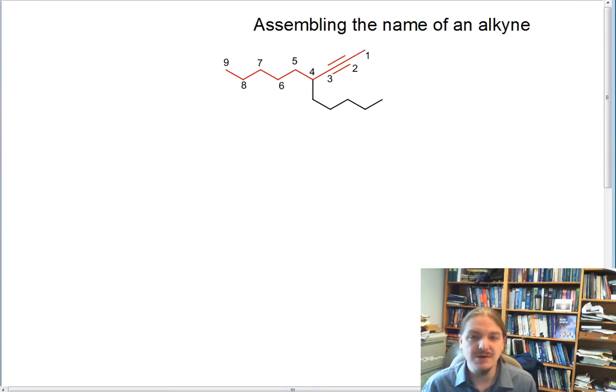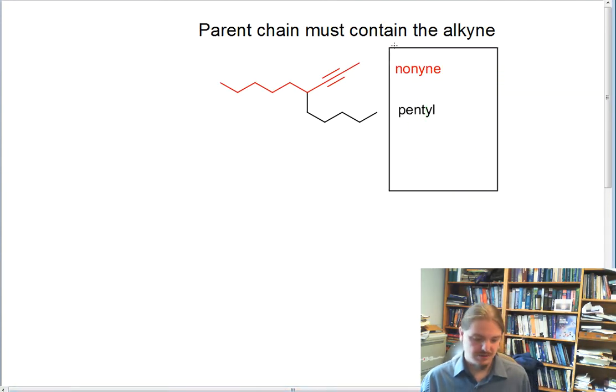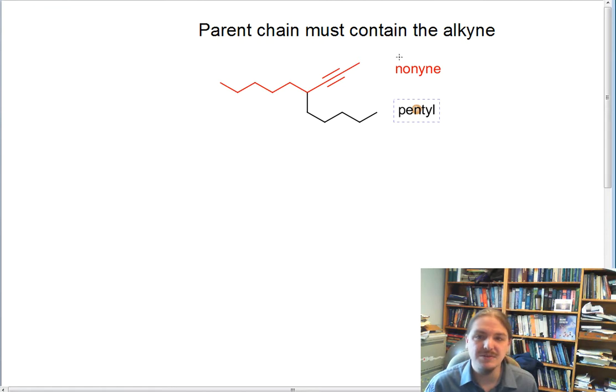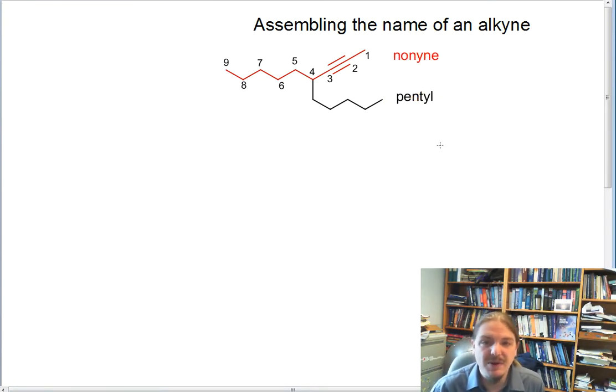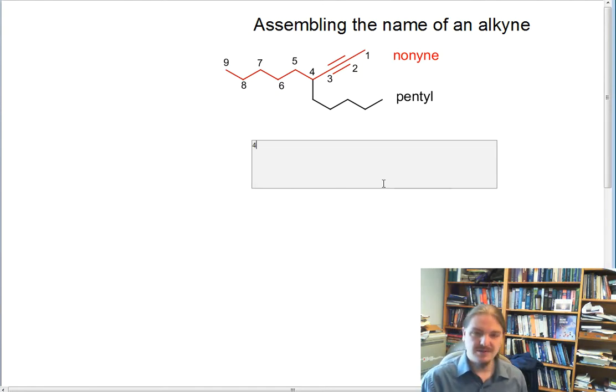Finally, now let's go and assemble our name. So we have our locants assigned here. We have a parent chain with the name nonyne. We have a substituent with the name pentyl. We've assigned our locants. So we can go ahead and start typing out the name of this molecule. And as always, we put the substituents at the beginning.